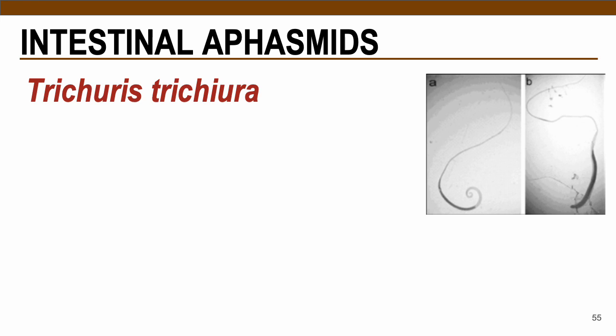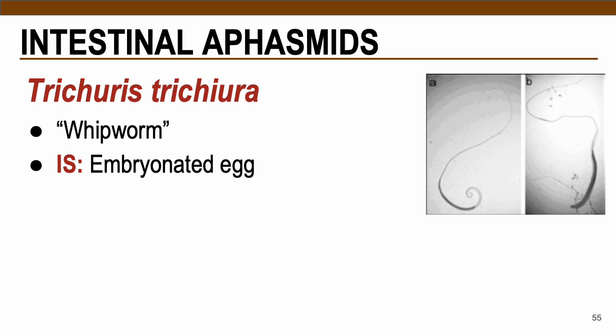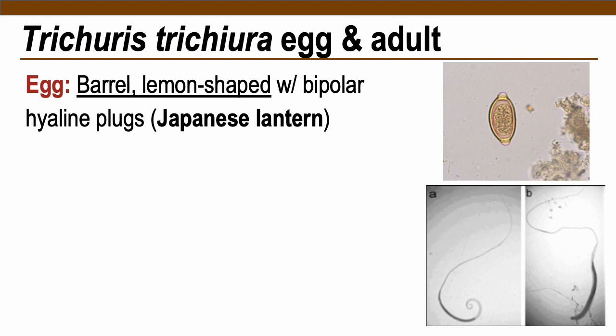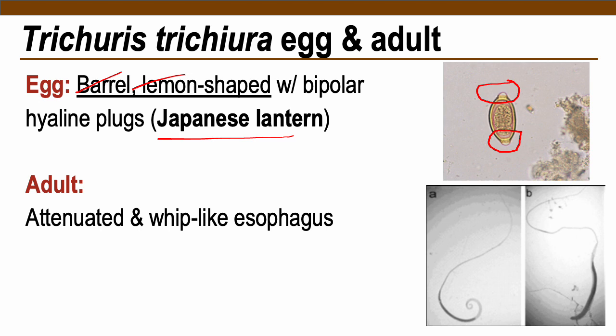The first aphasmid is Trichuris trichura, also known as the whipworm. The infective stage is embryonated egg (like Ascaris). Humans are the only definitive host. The egg is barrel-shaped and lemon-shaped with bipolar hyaline plugs — some textbooks describe it as the Japanese lantern egg. Adults have a whip-like esophagus; males are coiled posteriorly due to their copulatory bursa.